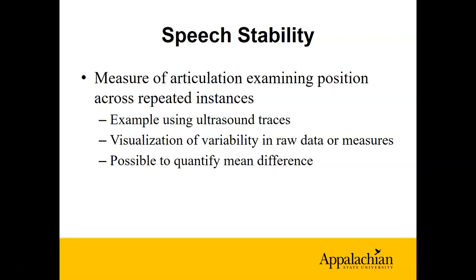Last but not least, I want to talk about looking at what appears to be normal speech — without errors — but examining how stable someone is in producing that speech. We can take measurements of articulation or acoustics across repeated instances of the same utterance and look at how consistently it gets articulated. I have examples using ultrasound. We can visualize this variability by looking at a whole bunch of tongue traces, or by doing computer measurements. It is possible to take ultrasound traces and quantify how different one curve is from another to get quantitative data.